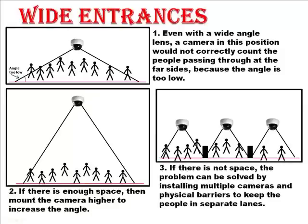This slide explains how to deploy counting line where there are very wide entrances and large volumes of people will be passing through at the same time. This is often an issue in retail or public transport applications and these three diagrams clearly show where problems can arise and the best ways to solve them. The problem can be seen in image 1, where the people at the side will not be counted properly because of the low camera angle. This can be solved by either raising the height of the camera in image 2, or by using multiple cameras to monitor the flow in lanes separated by a physical barrier in image 3.